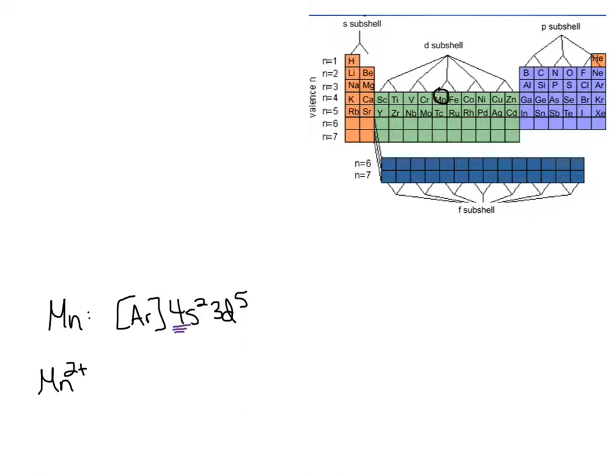So, for my Mn2+, I can write it as Ar, and those 4s electrons are completely gone now. So, I could just write Ar 3d5. Some people like to write Ar 4s0 3d5, and that's totally fine. But, make sure you're removing electrons from the outermost energy level first.